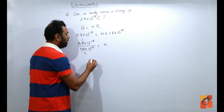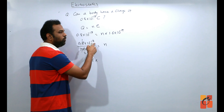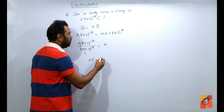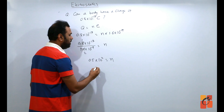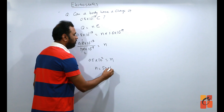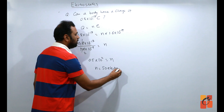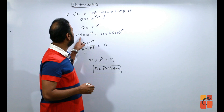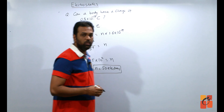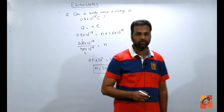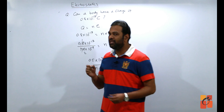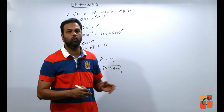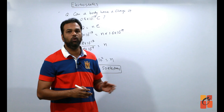जब electron transfer होते हैं one place to another — suppose glass rod से silk में — तो क्या आधा electron जाता है? नहीं। Electrons always transfer in whole numbers। इसलिए Q = Ne में N should always be a whole number (integer) — 1, 2, 3 electrons transfer होंगे, आधा-पौना नहीं।